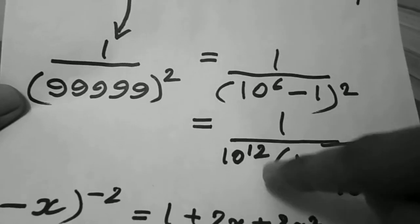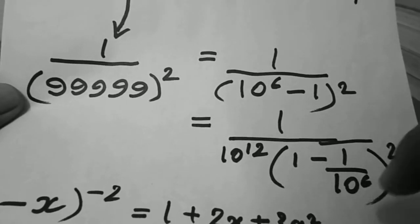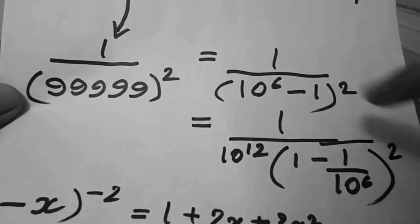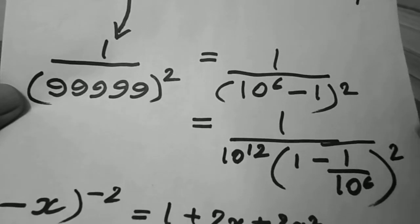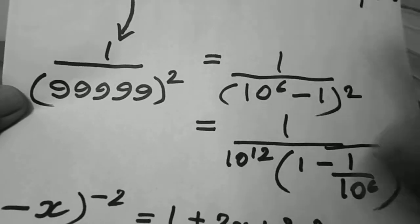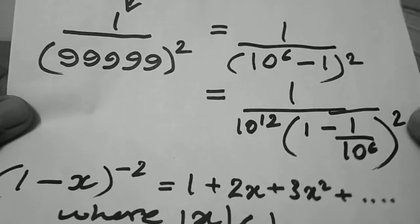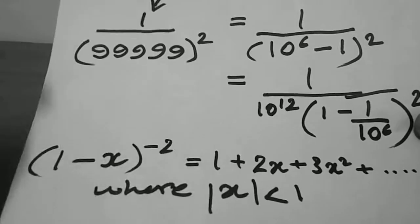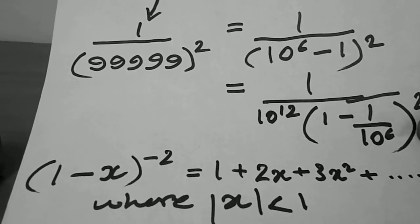We see that this part, that is 1 minus 1 by 10 raised to power 6, raised to 2, its reciprocal can be written as minus 2. You know the formalities, I hope.